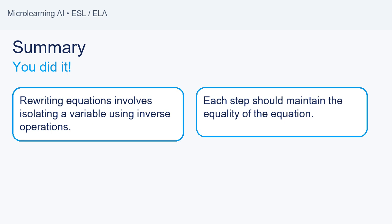Summary: Rewriting equations involves isolating a variable using inverse operations. Each step should maintain the equality of the equation.